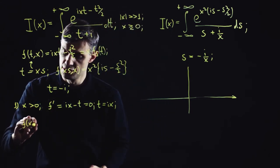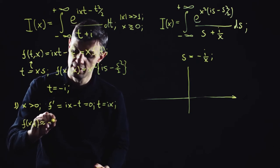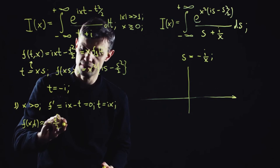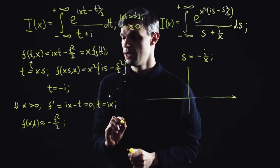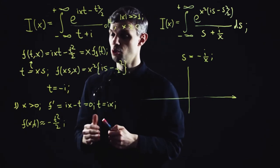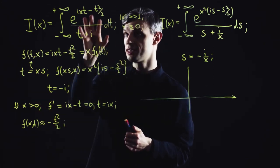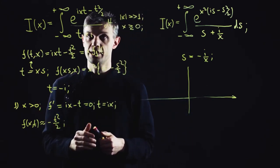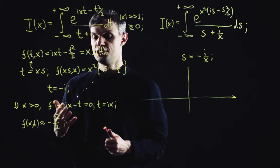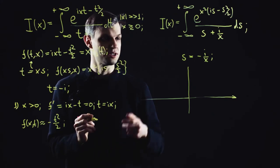So for large t, the exponent function is simply negative t squared over 2. So what would be the condition for convergence of the integral? Well, obviously, since this is an exponential function, we would like this exponent thing to be large and negative.